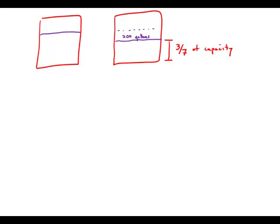When 200 gallons of oil were removed from a tank, the volume of oil left in the tank was 3/7ths of the tank's capacity. What was the tank's capacity?